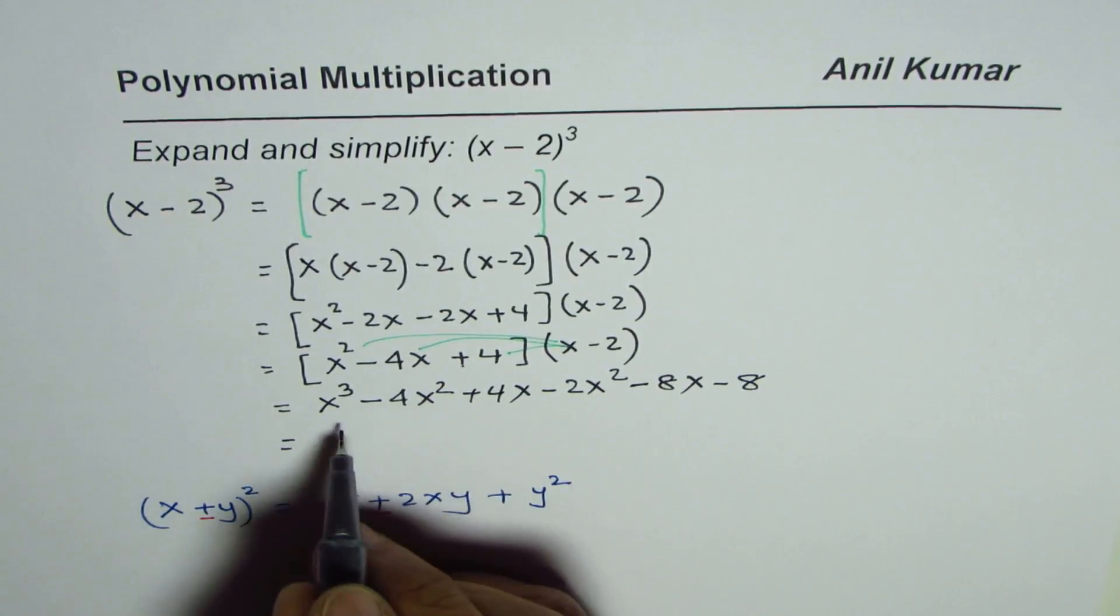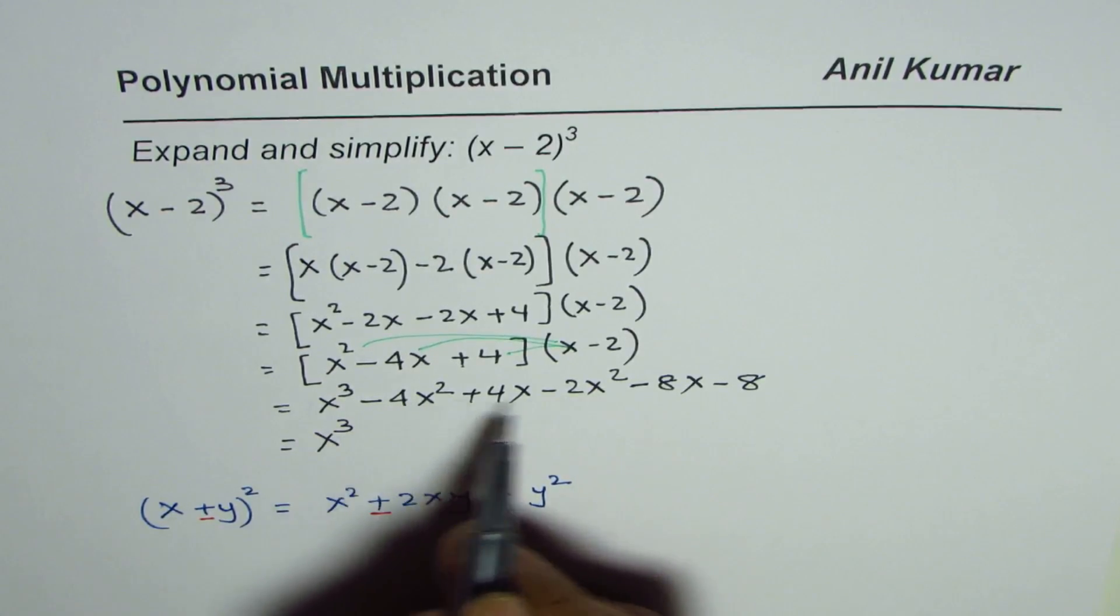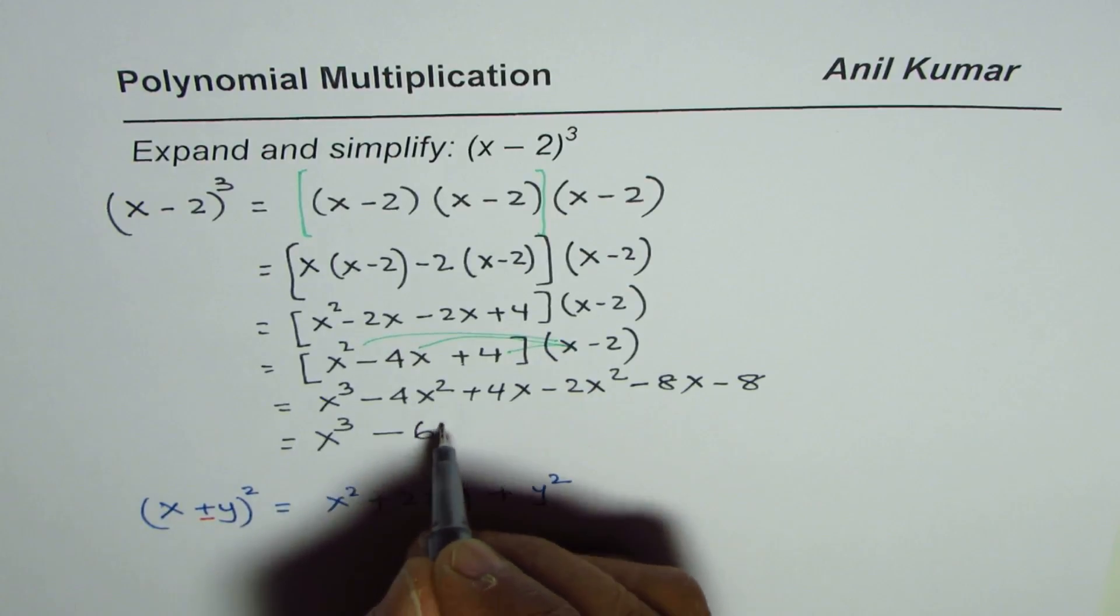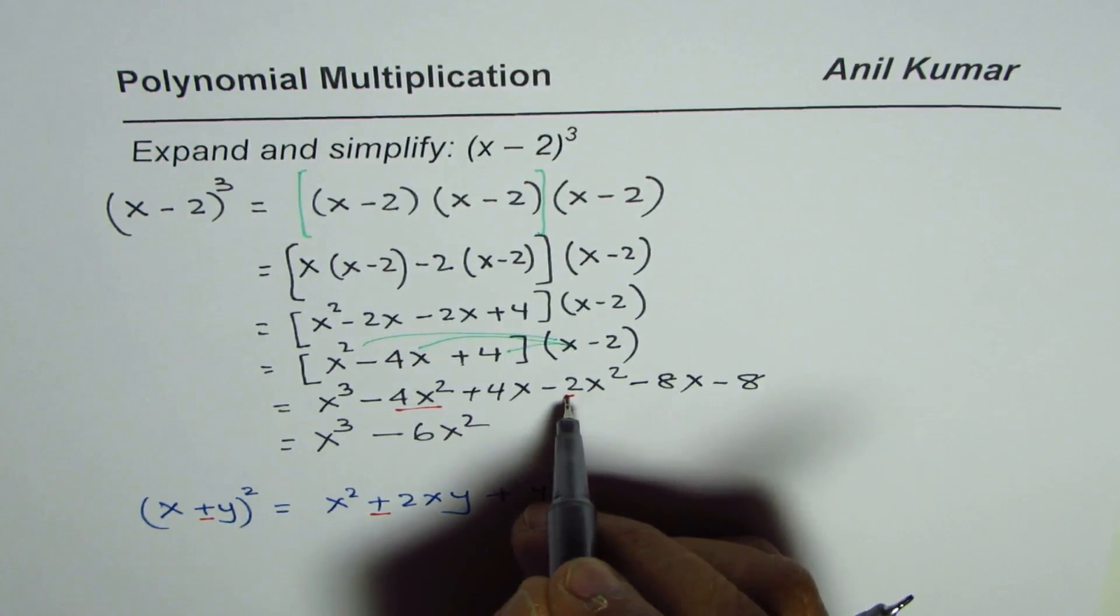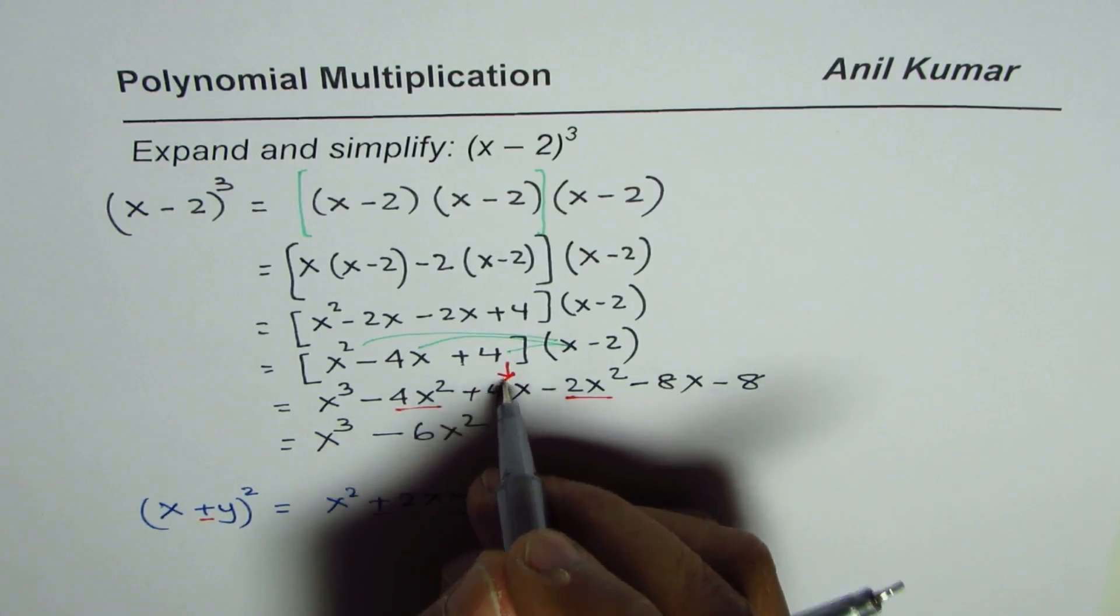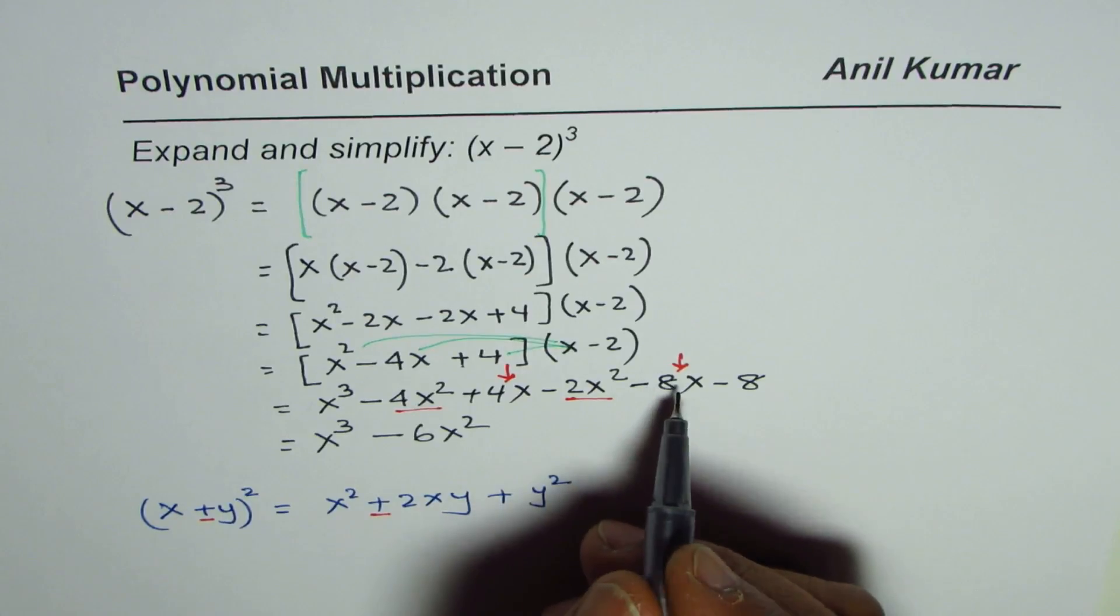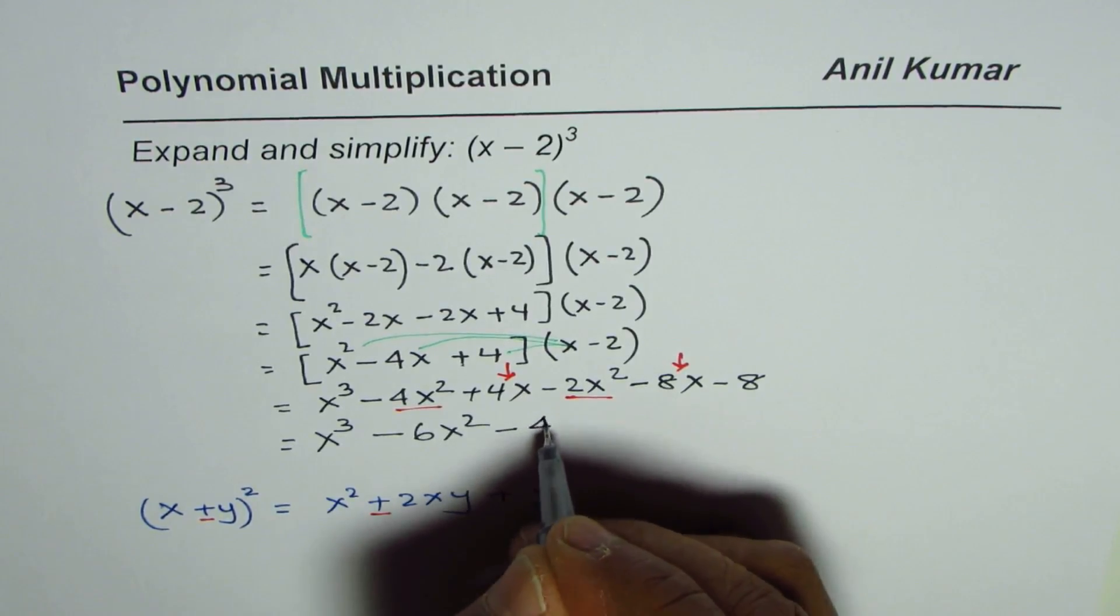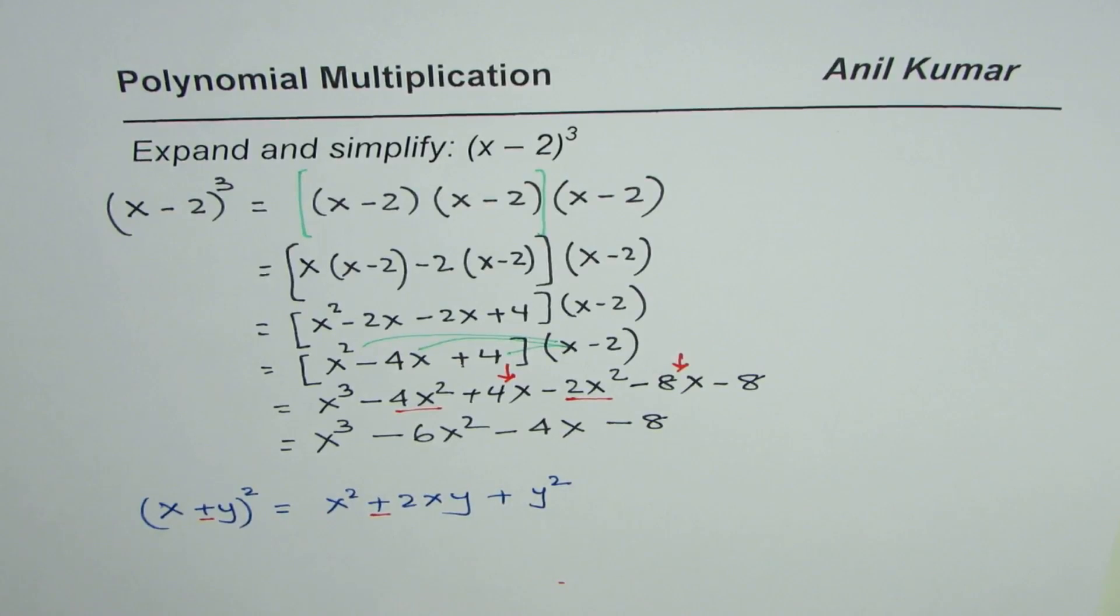And then we will combine the like terms. x cube minus 4x square and minus 2x square gives us minus 6x square. So we combine these two terms. And now we will combine these two: 4x minus 8x will give us minus 4x, and we are left with minus 8. That is the answer for us.